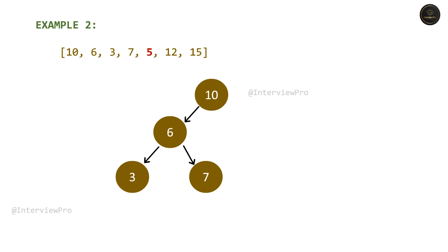Now we have node 5, which is less than 7, so it goes to the left of 7. But every node that is to the right of 6 should be greater than 6. When we insert 5 to the left of 7, we have to make sure it is greater than 6. But 5 is not greater than 6, so this is not a valid binary search tree pre-order sequence.